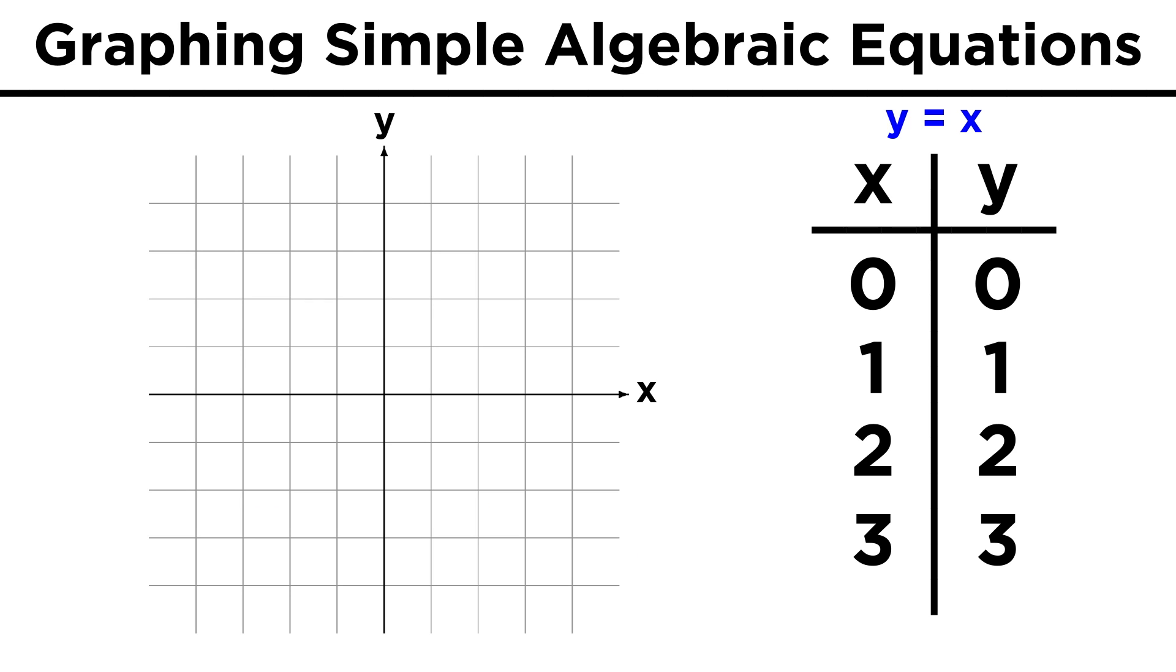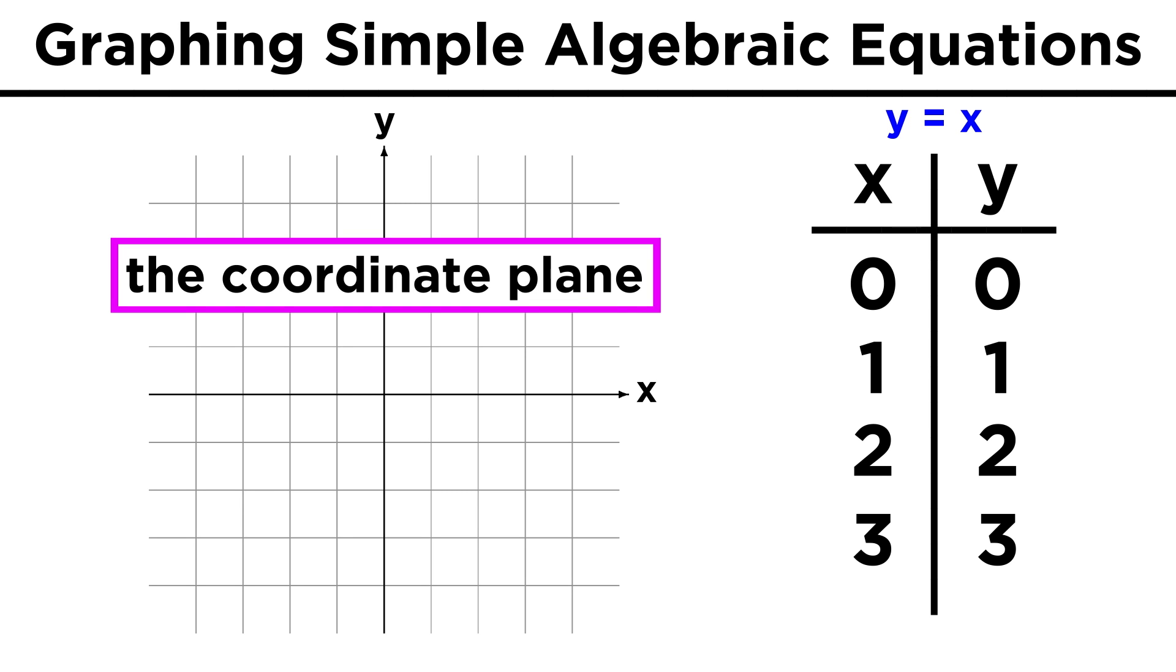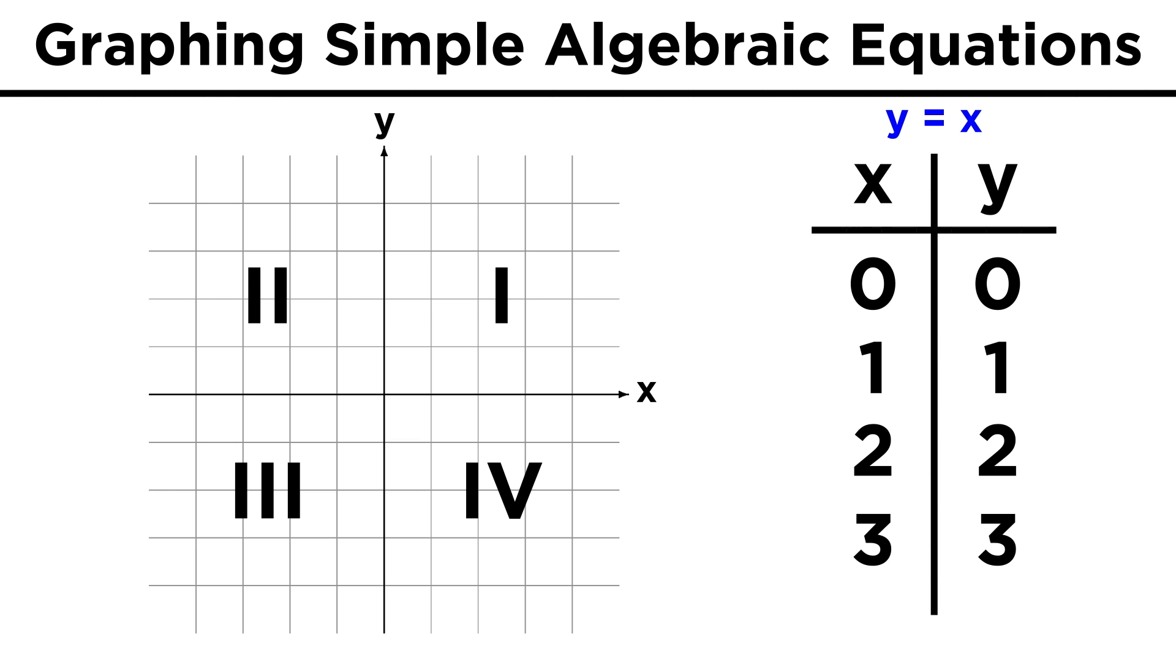Why don't we draw a grid? On this grid, which we call the coordinate plane, we can create two axes, the x-axis and the y-axis, which split the plane up into four quadrants.